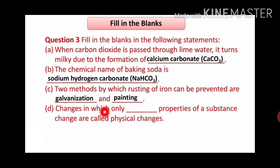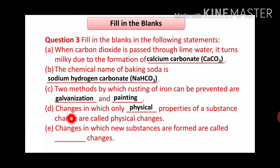Next blank: changes in which only the physical properties of a substance change are called physical changes. In physical changes, only physical properties change. The answer is physical. In chemical changes, the characteristic of the substance changes and a new substance is formed. Next blank: changes in which new substances are formed are called dash changes. If in a process, new substances are formed, we call it chemical changes.